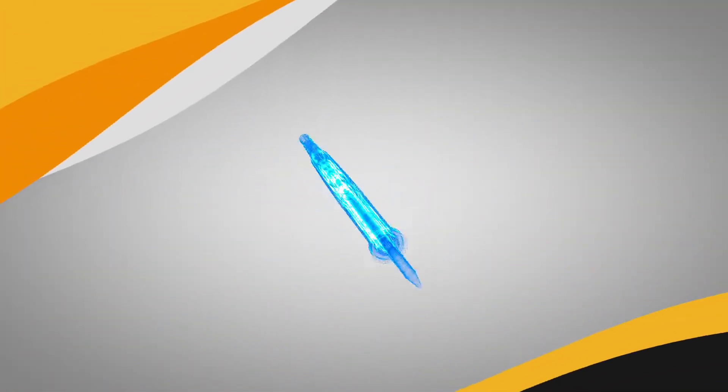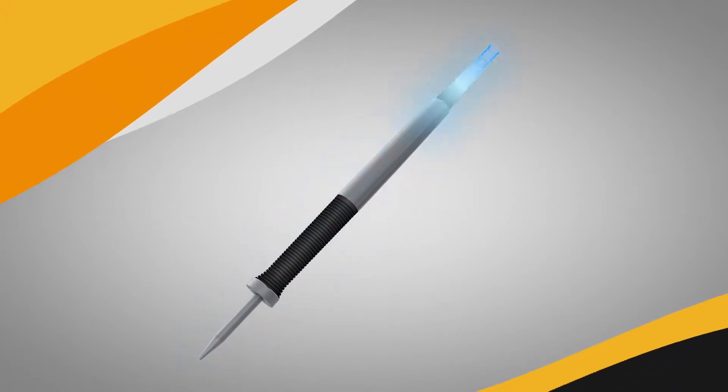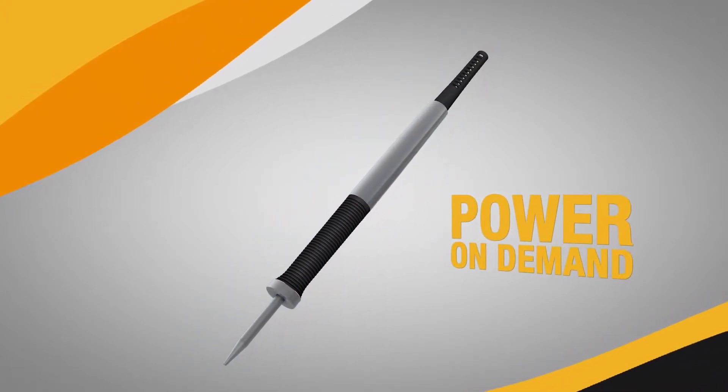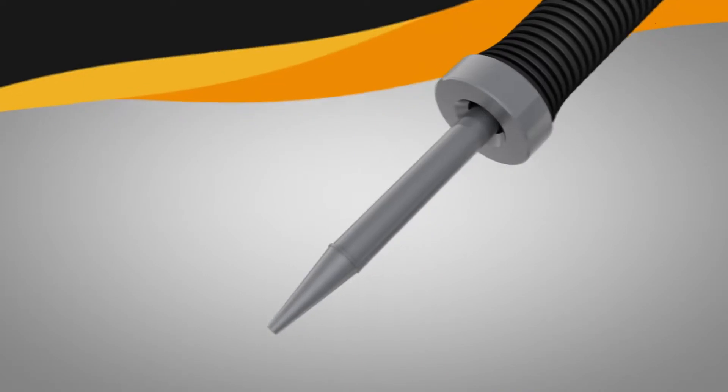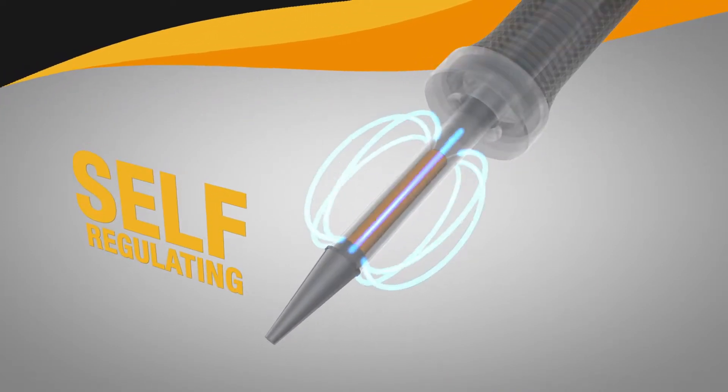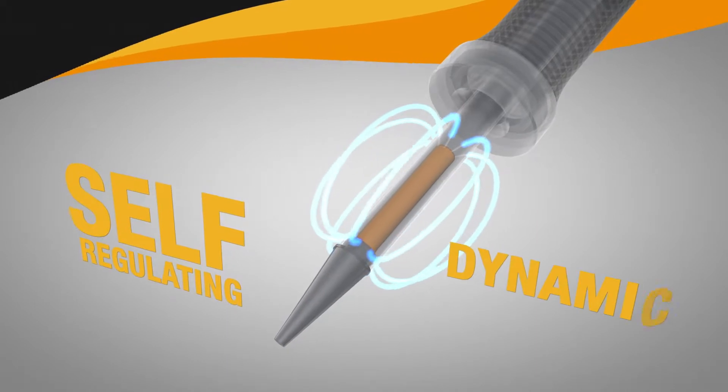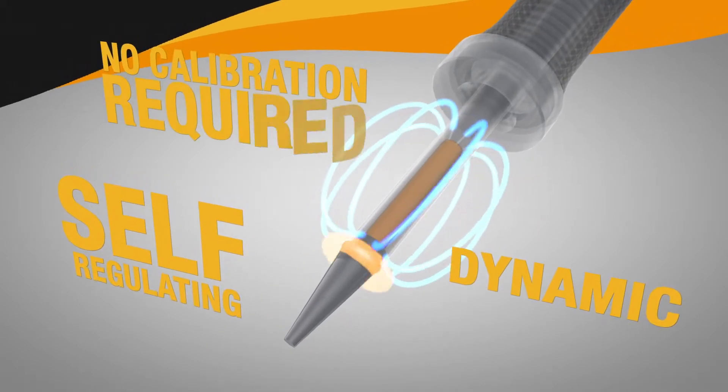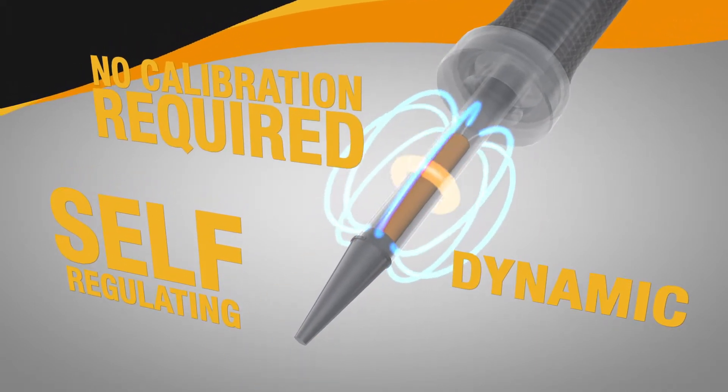SmartHeat senses the thermal load and instantly delivers power on demand directly to the joint. The precise amount of power is delivered using a self-regulating heater embedded in the tip. This provides a fast, safe and repeatable process with no calibration required.